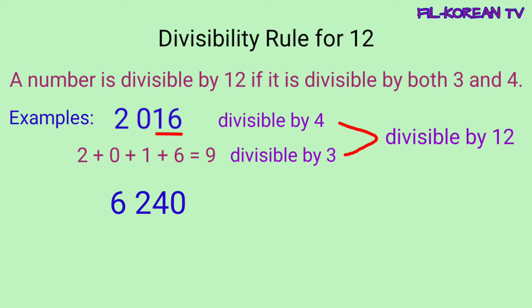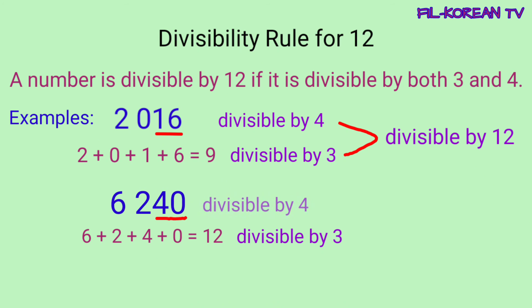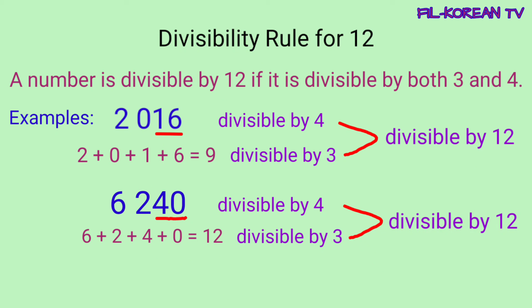At dahil yung given number ay divisible pareho ng 3 at 4, ito ay divisible din ng 12. Another example: 6,240. I-check natin kung ito ay divisible by 3 — i-plus natin ang lahat ng digits: 6 plus 2 plus 4 plus 0 equals 12. Yung sum ay divisible by 3, kaya yung given number ay divisible by 3. Yung last 2 digits ay 40, ang 40 ay divisible by 4, so yung given number na 6,240 ay divisible by 4. At dahil yung given number ay divisible pareho ng 3 at 4, then ito ay divisible din ng 12. Dapat yung number ay divisible pareho ng 3 at 4 para maging divisible din siya ng 12.